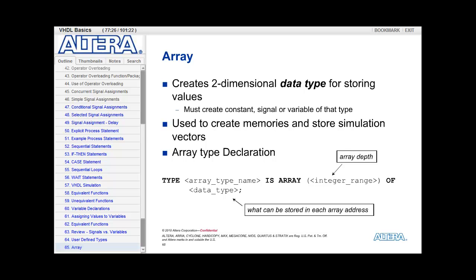The array allows you to create a two-dimensional data type for storing values. And I want to put data type in bold because you're creating a data type, not an actual structure. Then, after you create the data type, you have to create a constant or a signal or a variable of that type.